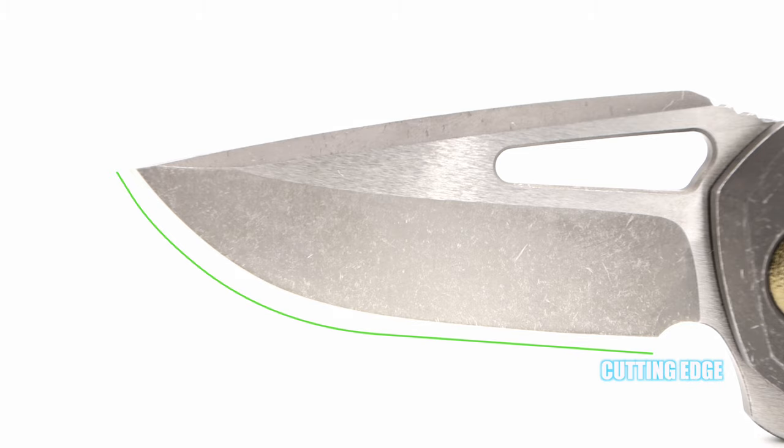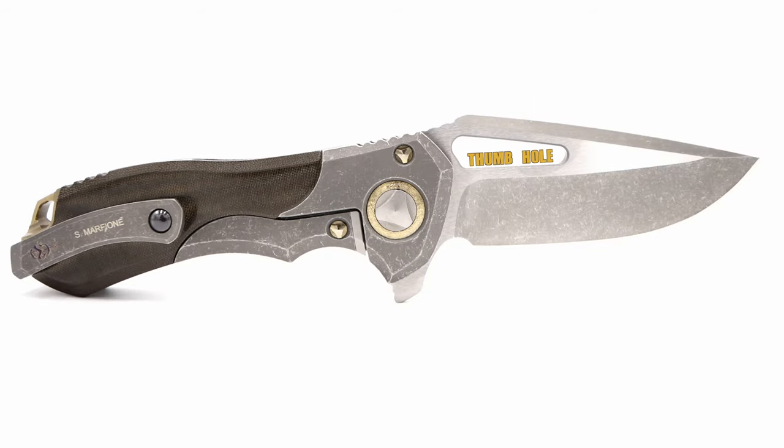Due to the steep belly ending in a long flat edge, the cutting edge comes in at 2 and 875 thousandths of an inch. The blade also sports a thumb hole along with a flipper tab for dual means of deployment.